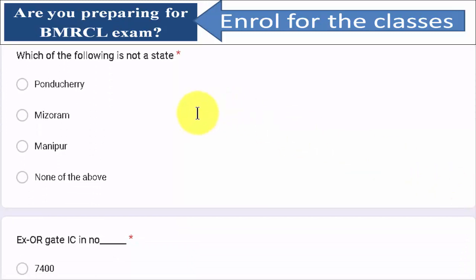Which of the following is not a state? Pondicherry is not a state. Mizoram is a state. Manipur is a state.